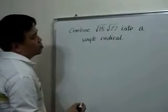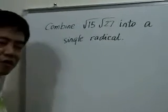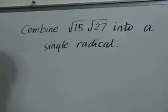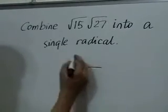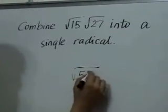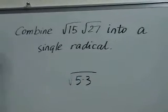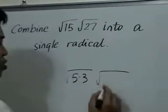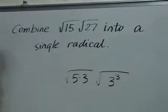First, we'll write 15 and 27 as the product of prime factors. So we have square root of 5 times 3 for square root of 15, times the square root of 3 cubed for the square root of 27.